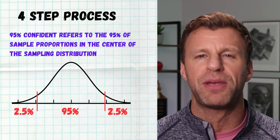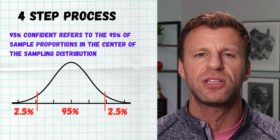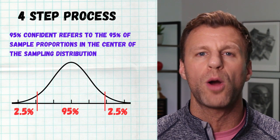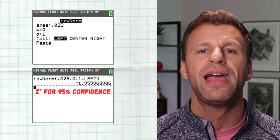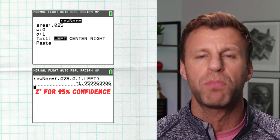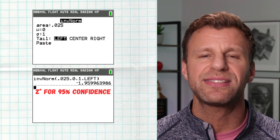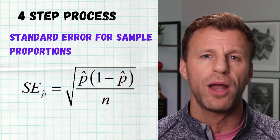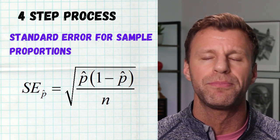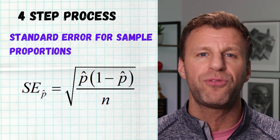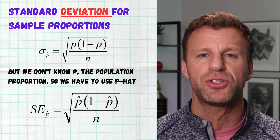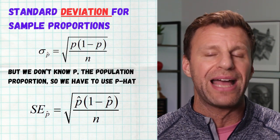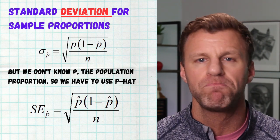For 95% confidence, that's 95% of samples in the middle, 5% left out — two and a half at the bottom, two and a half at the top — so we do invert norm of 0.025 to get our Z star. Then we need the standard error: the square root of P hat times one minus P hat, all divided by the sample size N. This is the same formula as the standard deviation of a sampling distribution for sample proportions, but since we don't know the true P, we use P hat instead — that's why it's called standard error.